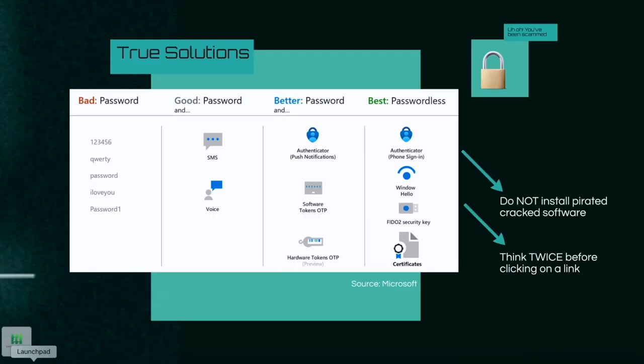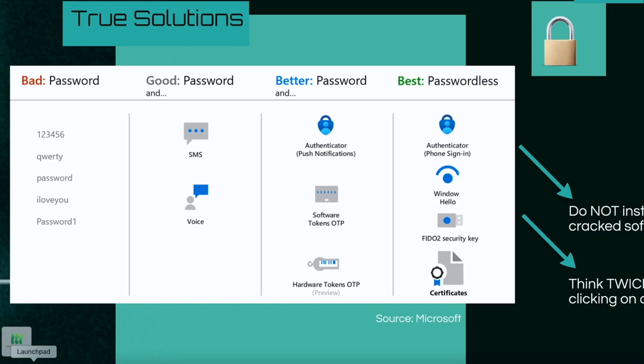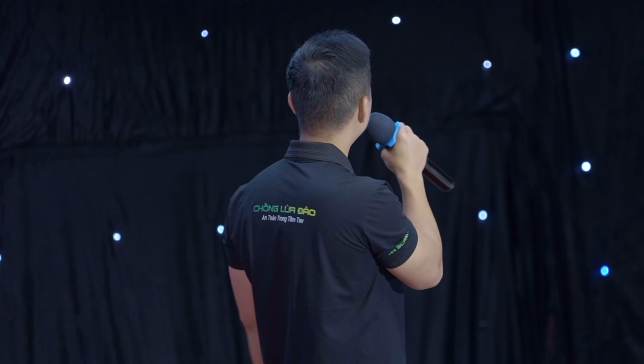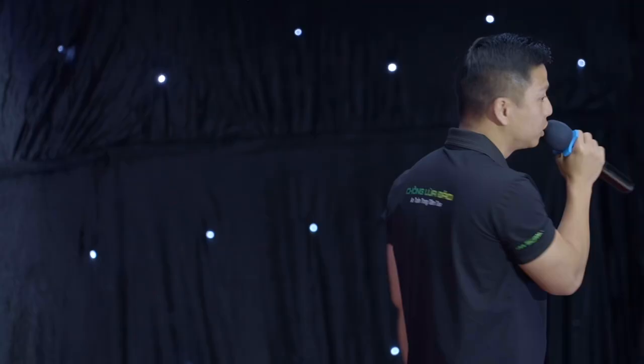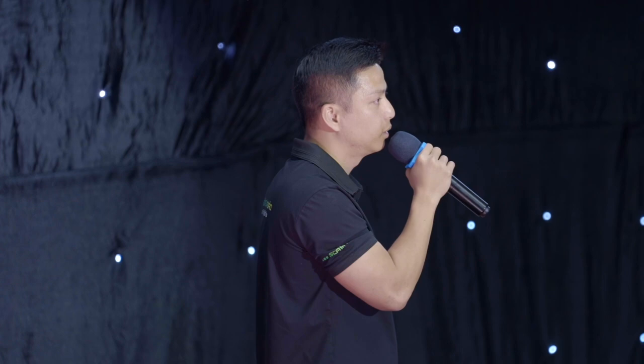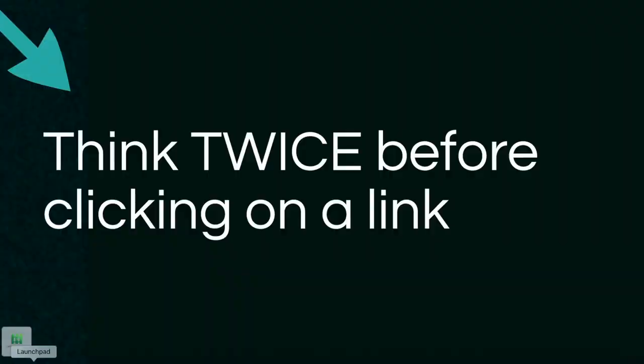The true solution is — we're not talking about bad and good, but about better and best. The better option for regular people is: if you have time, please set up two-step authentication right now, because passwords nowadays are not as safe as before. As humans, we can't remember so many passwords, so we reuse the same password for maybe 20 different platforms. Two-step authentication will help protect you even if you reuse passwords. My recommendation: do not install pirated or cracked software.